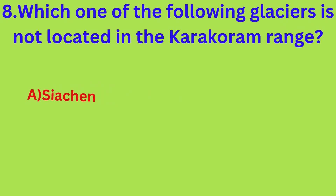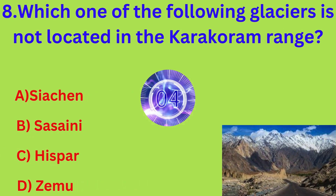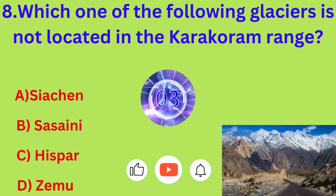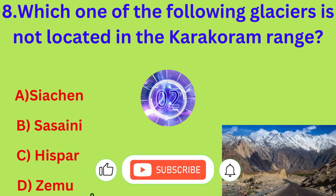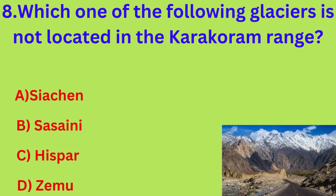Which one of the following glaciers is not located in the Karakoram range? The correct answer is option B: Siachen.